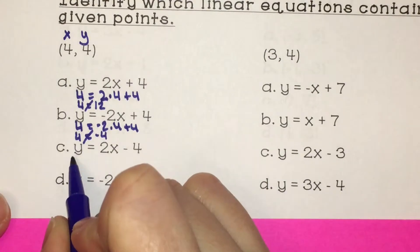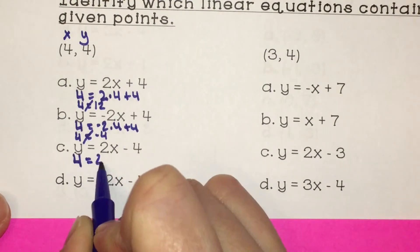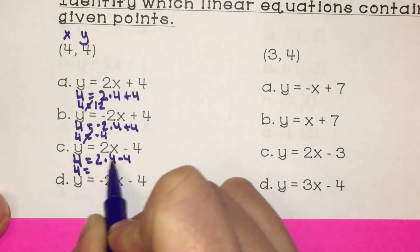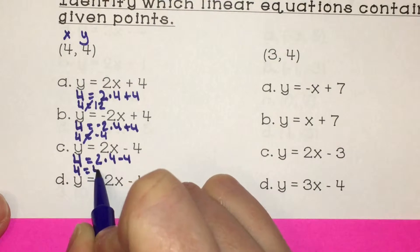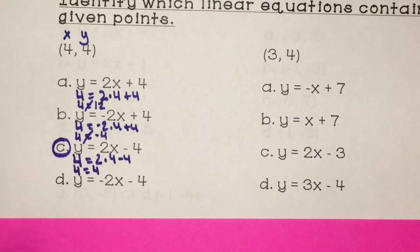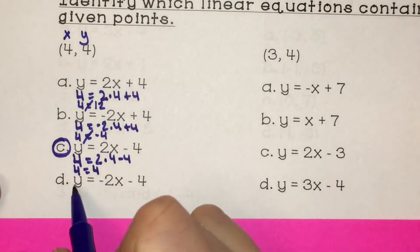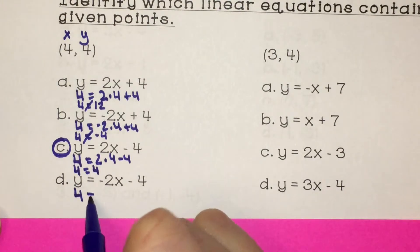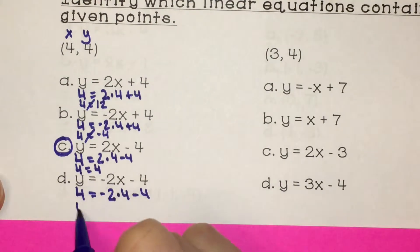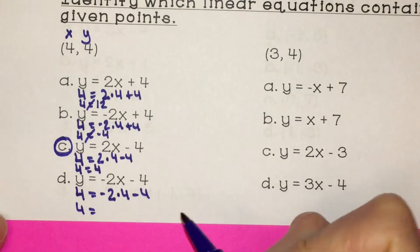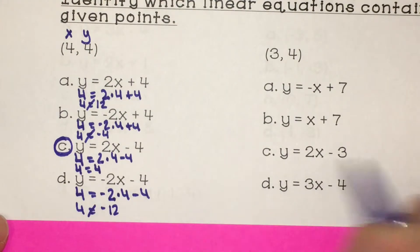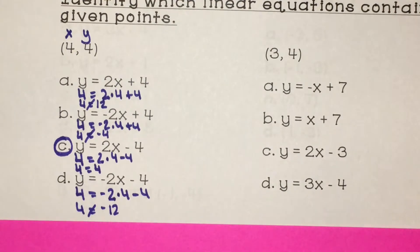We'll try letter C. y is 4 equals 2 times 4 minus 4. So we have 4 equals 2 times 4 is 8, and 8 minus 4 is 4. Because the two sides are equal, this one does work. I'm going to try D just in case: 4 equals negative 2 times 4 minus 4, so 4 equals negative 8 minus 4 is negative 12. Two sides are not equal, so C is the only one that works.